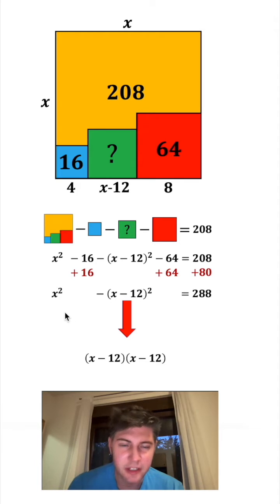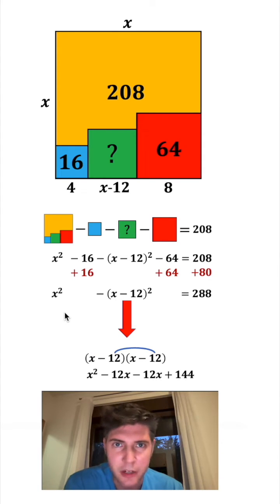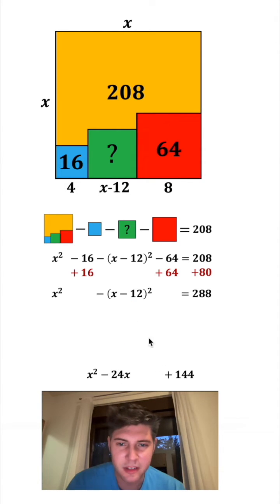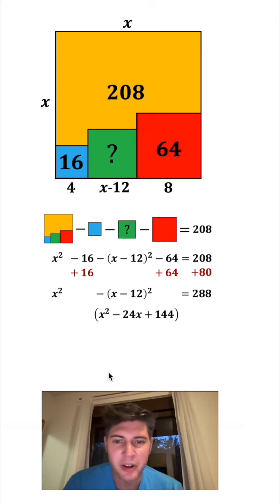So this piece right here, we can bring down and distribute it out. X times x is x squared. X times negative 12 is negative 12x. Negative 12 times x is negative 12x, and negative 12 times negative 12 is equal to 144. Negative 12x minus 12x is equal to negative 24x. We can get rid of this stuff and bring this up here. Let's put parentheses around it, and then we'll bring down our x squared minus, and that's still equal to 288.